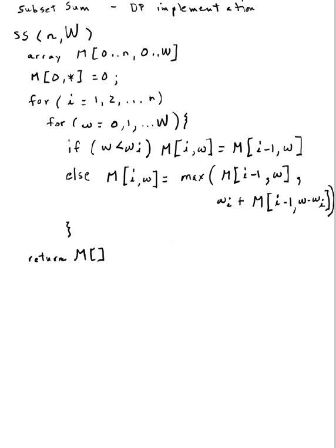I'd like to continue talking about the subset sums problem, and now I'm finally at the dynamic programming implementation of this problem. So to make things concrete, let's have three items, w1, w2, w3, and let me just make the weights be 1, 2, and 3 so that everything is very simple, and my upper bound on the weights is just 5. So let us trace through this algorithm right here to see the dynamic programming approach.